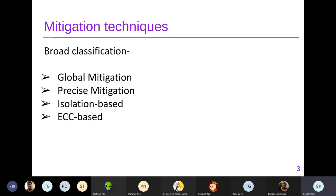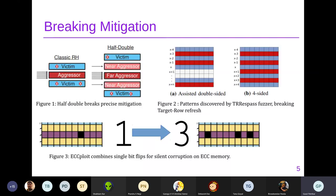Looking at how these mitigations are broken: the first figure shows Half-Double. As we saw in precise mitigation, it was assumed only the next row can be attacked, but here by constantly attacking the far aggressor, then the near aggressor, bit flips occur two rows ahead. In the second figure, Stress-Pass works by hitting as many rows as possible so that any mitigation technique tracking which rows are being hit cannot track an unlimited number of rows, creating chaos and enabling the attack.